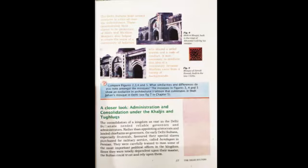The Delhi Sultans built several mosques in cities all over the subcontinent. This demonstrated their claims to be protectors of Islam and Muslims. Mosques also helped to create the sense of a community of believers who shared a belief system and a code of conduct. It was necessary to reinforce this idea of a community because Muslims came from a variety of backgrounds. During this period, numerous mosques were built.